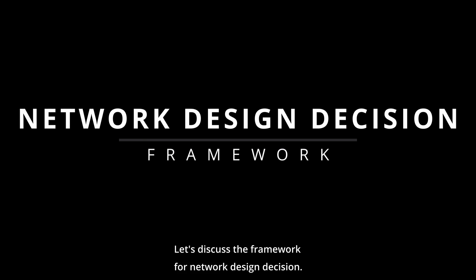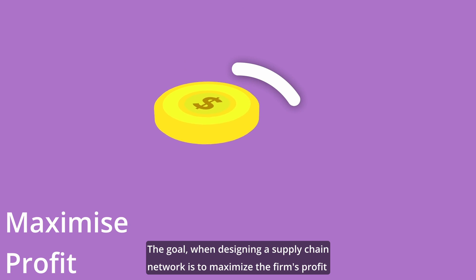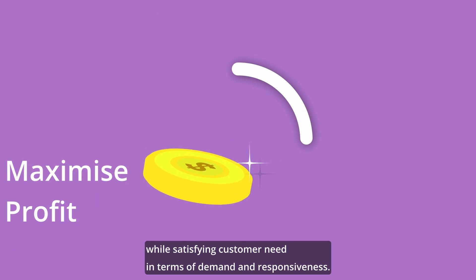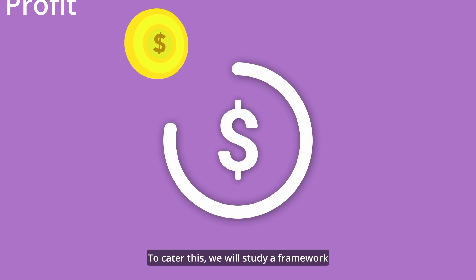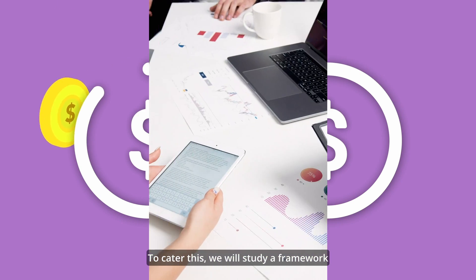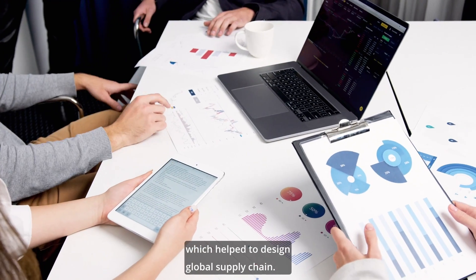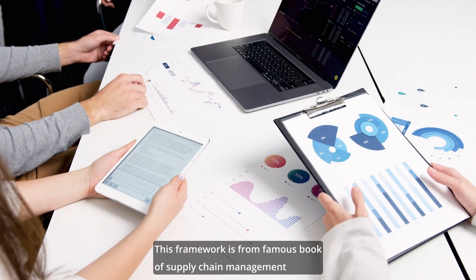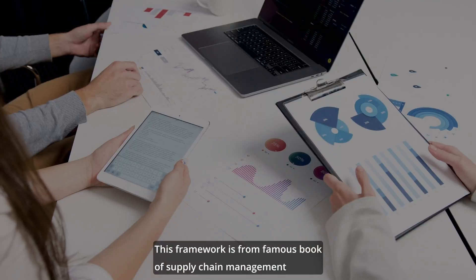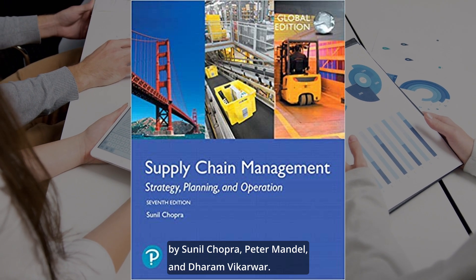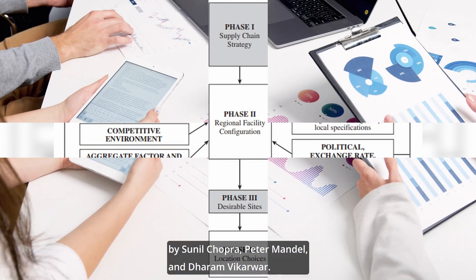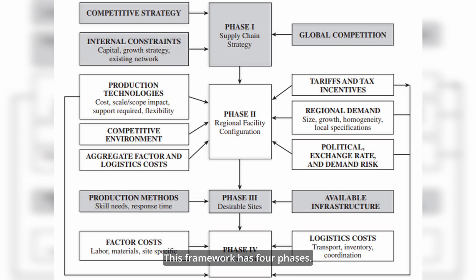Let's discuss the framework for Network Design Decision. The goal when designing a supply chain network is to maximize profit while satisfying customer needs in terms of demand and responsiveness. We will study a framework which helps to design a global supply chain. This framework is from famous authors of Supply Chain Management: Sunil Chopra, Peter Meindl, and Dharam Vikarl. This framework has four phases.